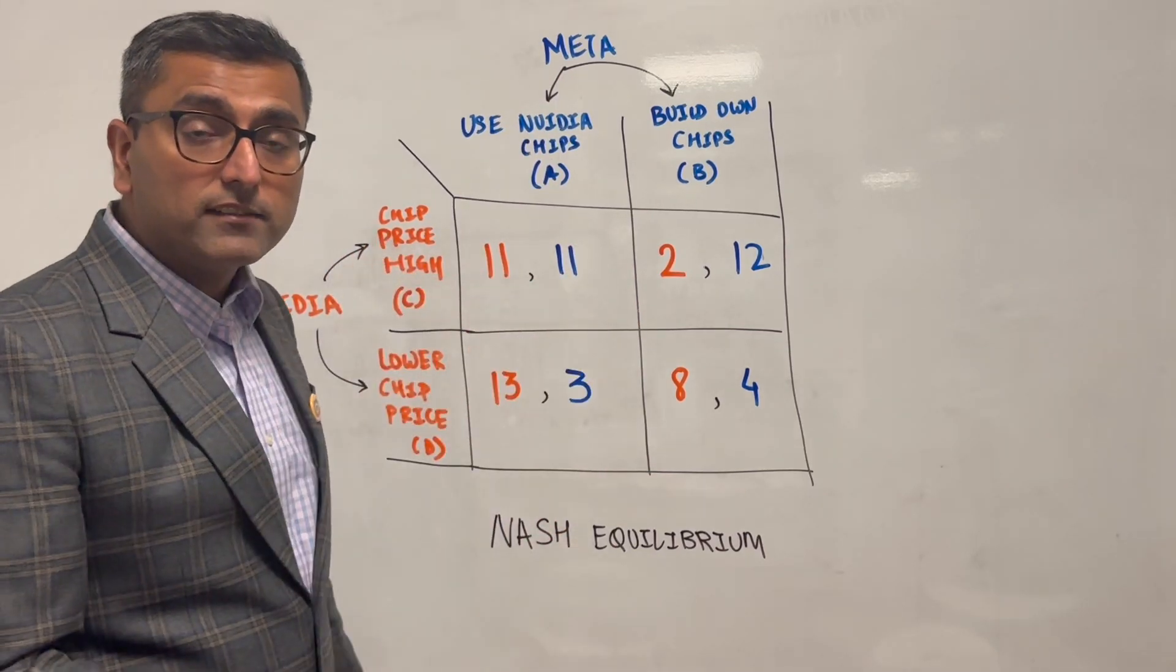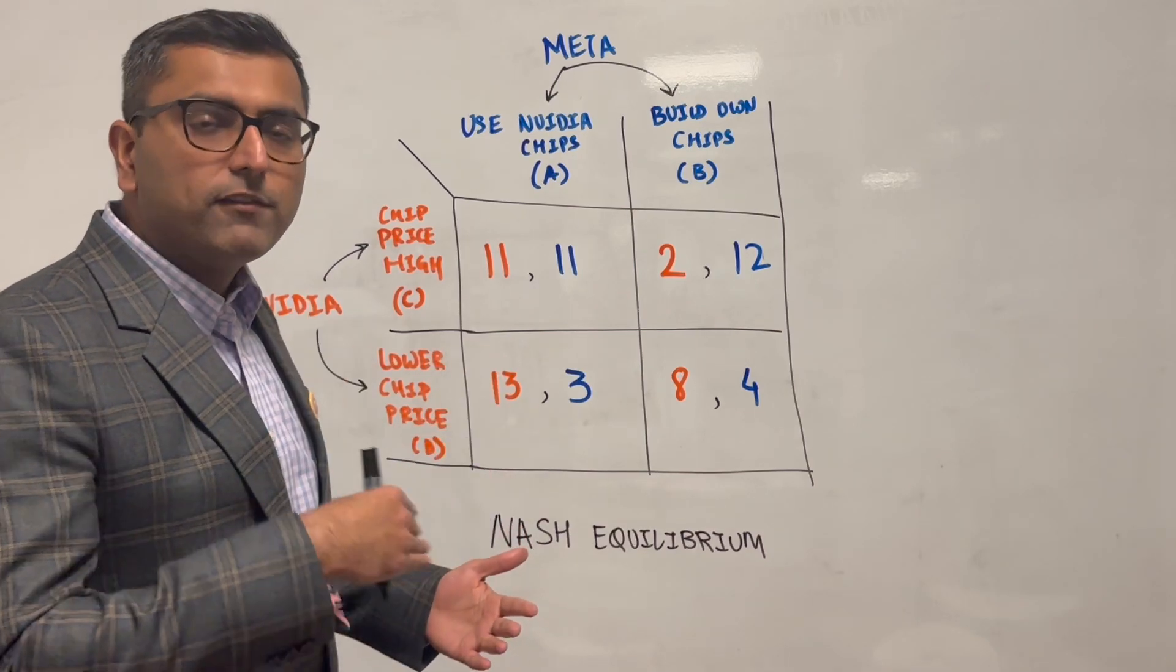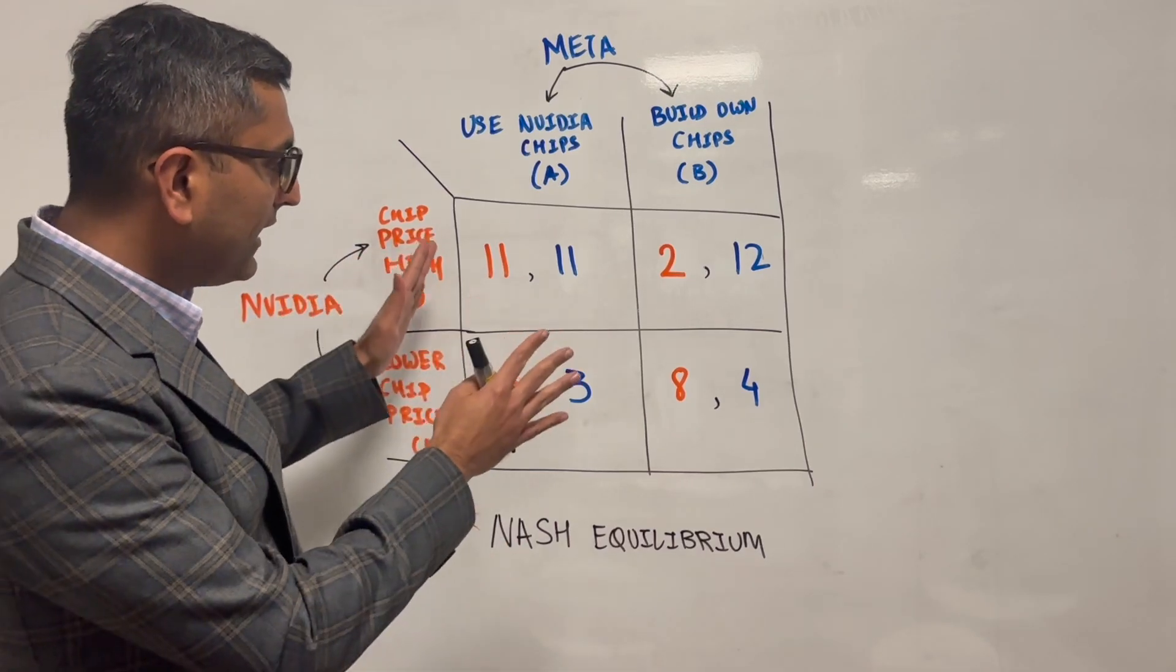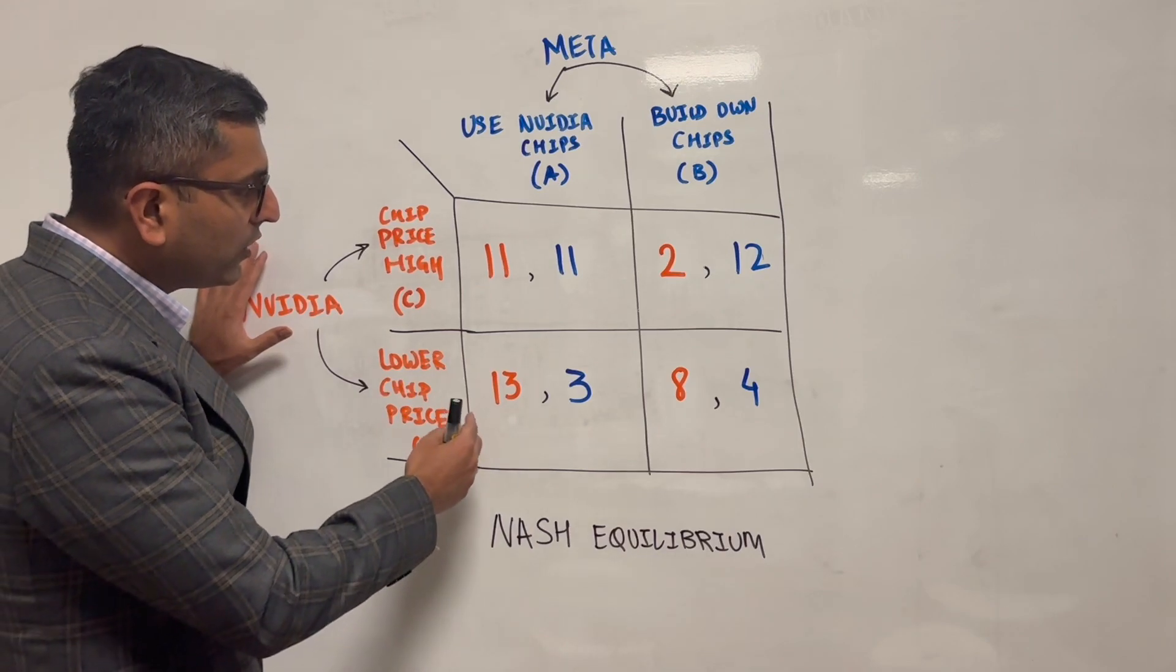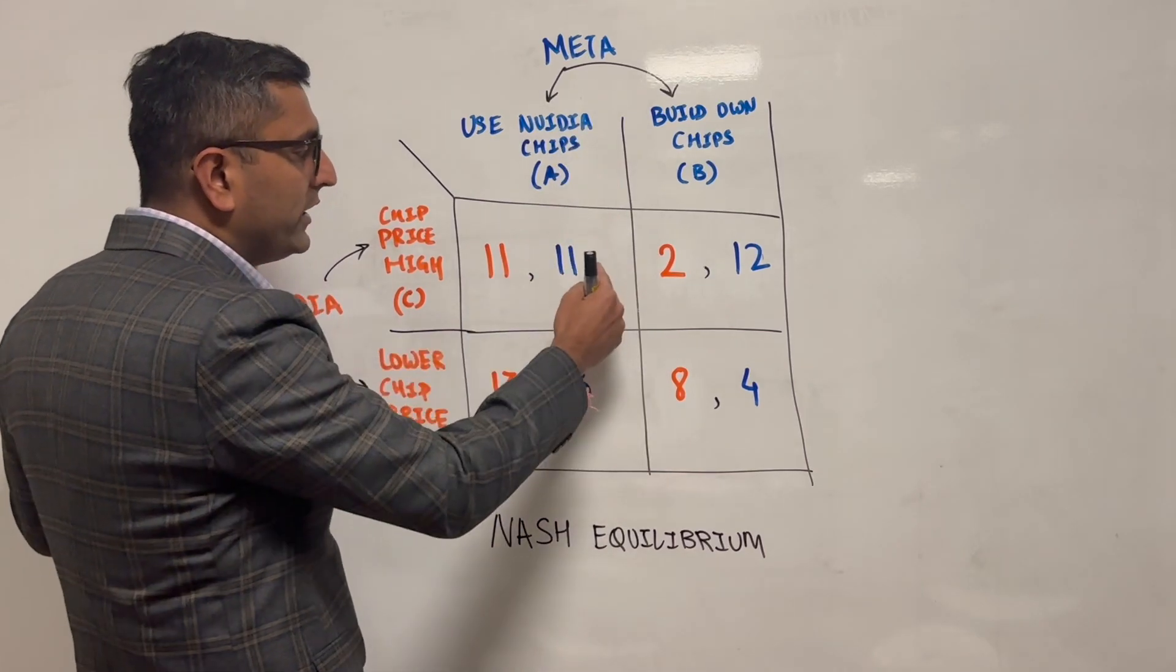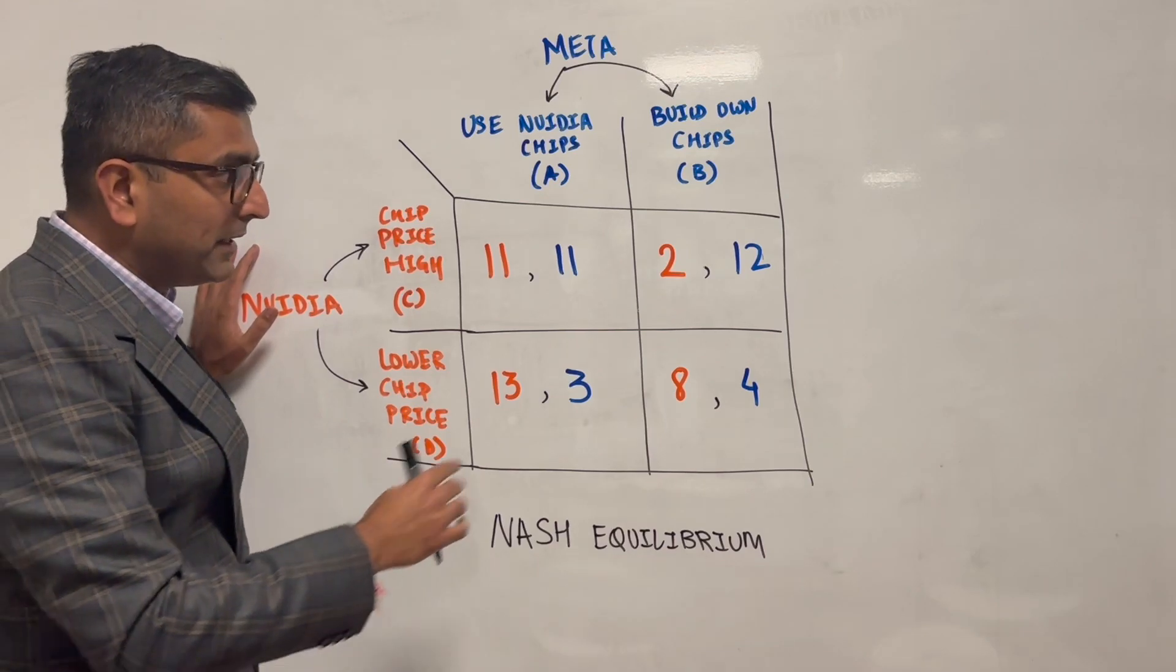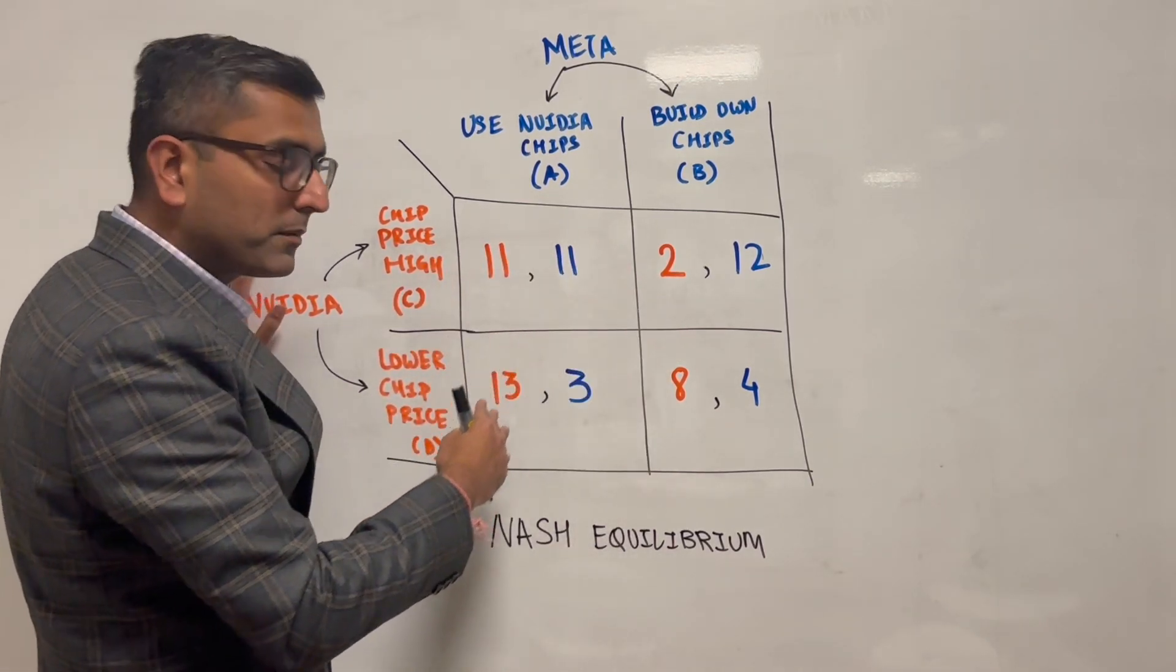So now they both are thinking at the same time what they should do and they're constantly going to evaluate those choices and keep iterating their decisions. Nvidia knows about only their payoffs numbers. Meta only knows about their numbers, but they would all estimate each other's numbers as well. So they would have a two by two of some sorts.